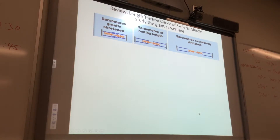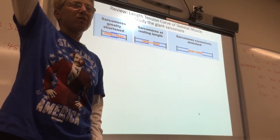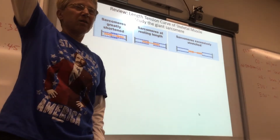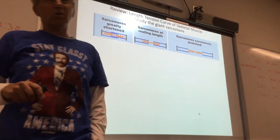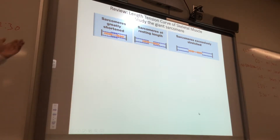This reminds me of the story of the three bears — the porridge was too hot, too cold, then just right. It's the story of the sarcomere. This is a review of the length-tension curve of skeletal muscle. You have to re-understand how this works to think about how cardiac muscle works. So in skeletal muscle, this is the resting length.